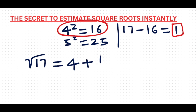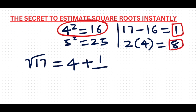Now let's find the denominator. To do that, we take 2 times the number 4, because 4 is the square root of 16. So 2 times 4 gives you 8, and 8 becomes the denominator. So you have 4 plus 1 over 8.